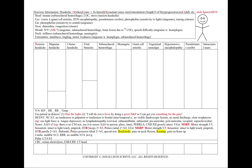For a case of a headache, using our mnemonic OLDCARDS, we'll note the onset — or when did it start. For the location, we want to know what side of the head your headache is on. For duration, has your headache been constant since it started, or is it more intermittent? If that's the case, we'd like to note the frequency — how long does your typical headache last, and how many headaches are you having per day or per week.